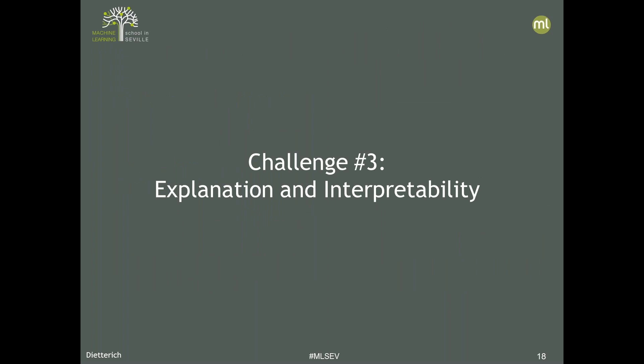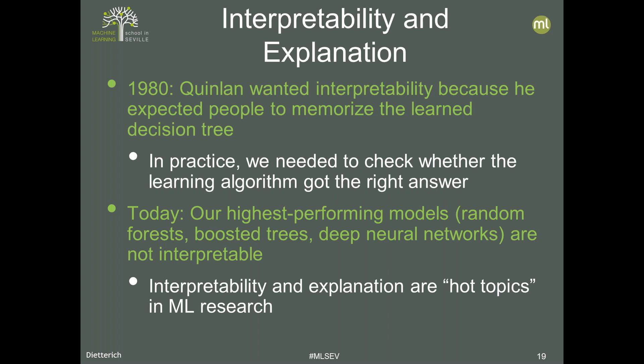The third challenge is explanation and interpretability. In 1980, Ross Quinlan wanted interpretability because he expected people to memorize the learned decision tree. Nowadays we don't expect that, but in practice we need to check whether the learning algorithm got the right answer, debug the system, and ask how we can improve things. Unfortunately, today our highest-performing models — random forests, boosted trees, or deep neural networks — are not interpretable. This is a very hot topic in ML research: can we develop ways of giving local interpretability to these models for individual predictions, and how can we get more global interpretability to identify parts of the model that are not working well?